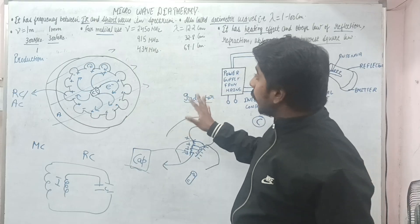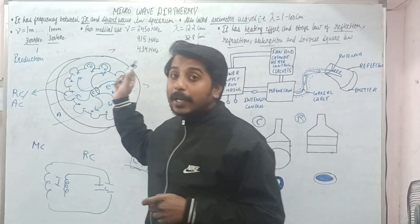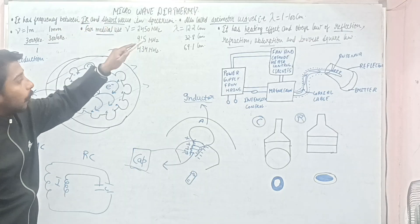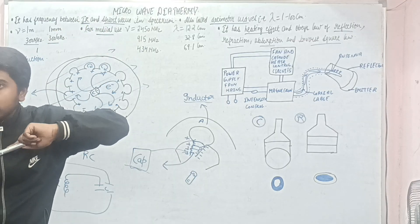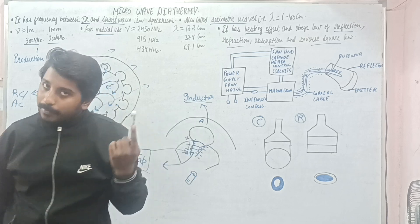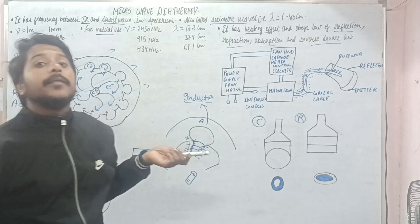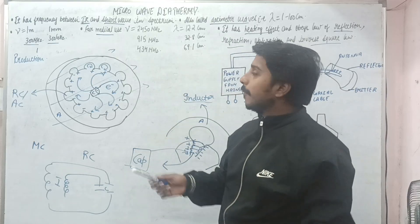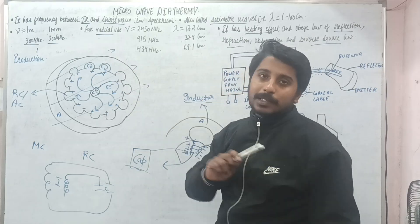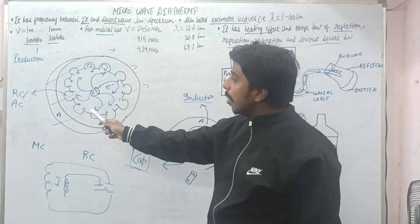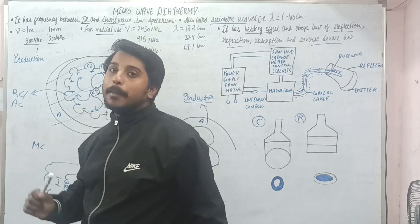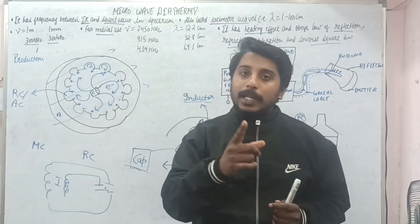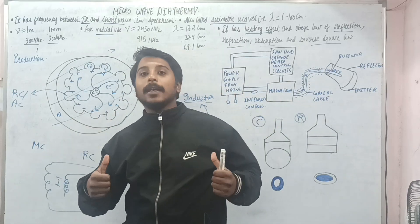So this is the whole first lecture. We studied that microwave has its frequency between IR and shortwave, it is called the decimeter wave because of its wavelength of 1 centimeter to 100 centimeter or 1 meter, different medical frequencies were given, and the production via magnetron is very important. In the next lecture we will move further toward MWD. Till then, keep on studying. Thank you to one and all.